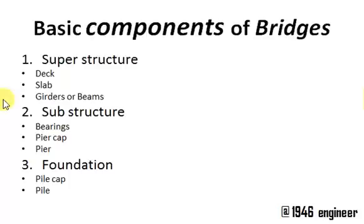Next, what are the basic components of a bridge? Every bridge will have three basic components — it may have many other components, but the basic ones are: superstructure, substructure, and foundation.